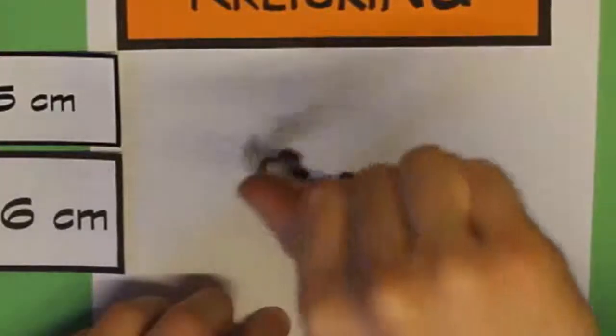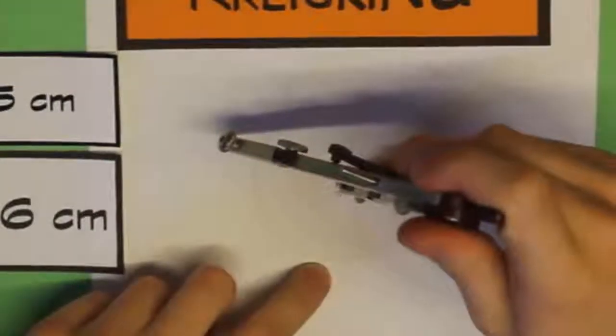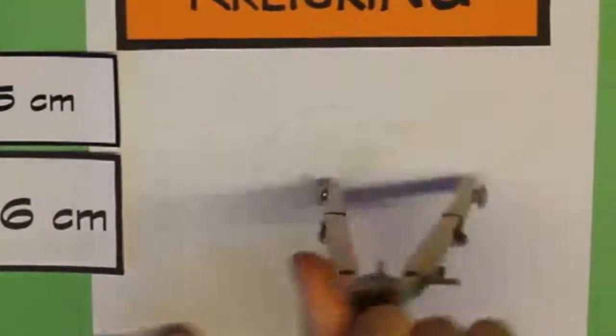Danach nehmen wir die 6 cm Radius in den Zirkel. Stechen auch wieder beim Mittelpunkt ein, also beim gleichen Mittelpunkt und zeichnen den Kreis. Dadurch entsteht der Kreisring.